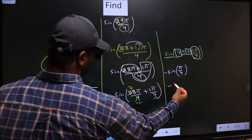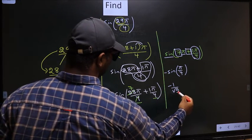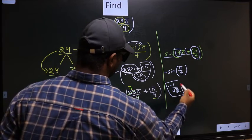So negative sine of π/4 is 1/√2. This is our answer.